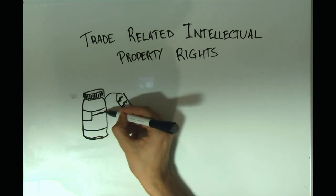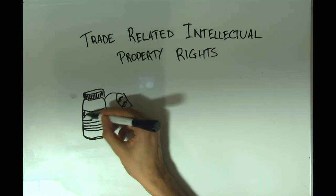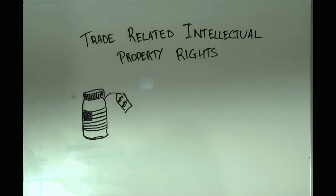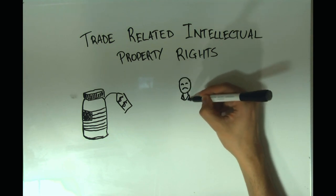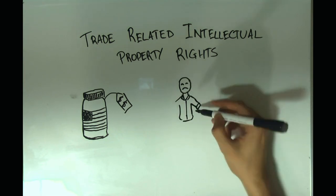But the problem is that TRIPS imposes rules that heavily favor advanced countries over developing ones. They allow advanced countries to maintain a monopoly on technology that developing countries are ultimately forced to buy, at nearly unaffordable prices.